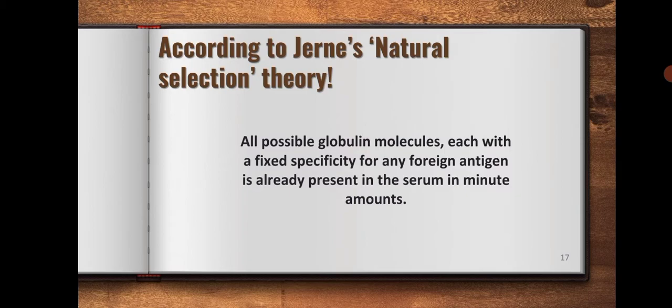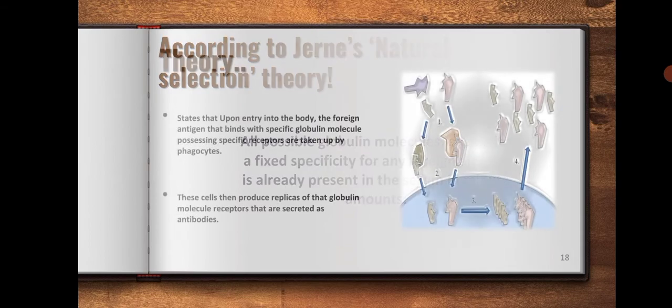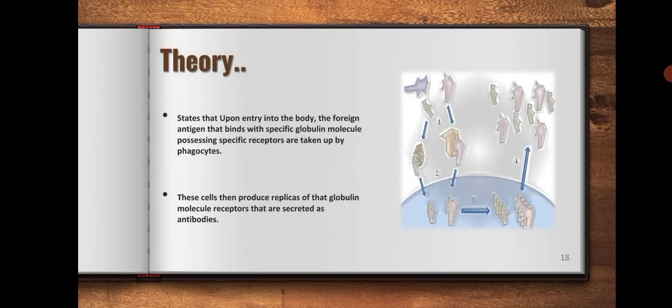The theory states that upon entry into the body, the foreign antigen that binds with the specific globulin molecule possessing specific receptors are taken up by phagocytes. These cells then produce replicas of the globulin molecule receptors that are secreted as antibodies.